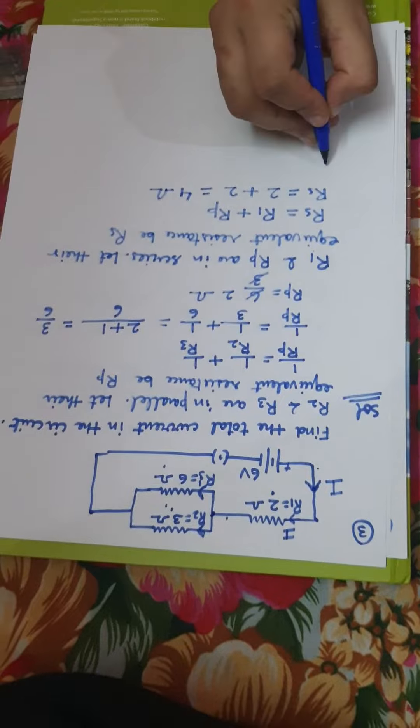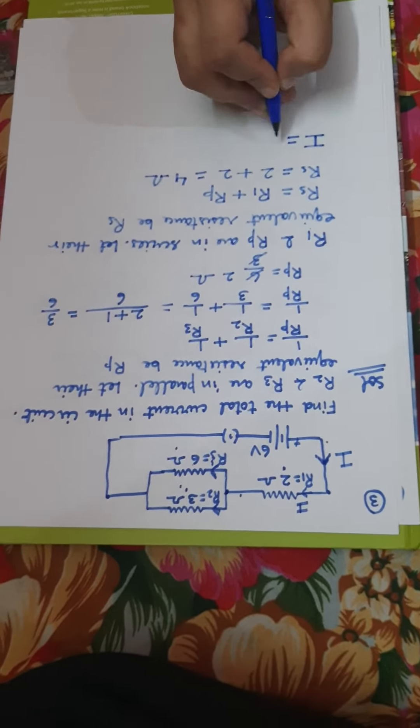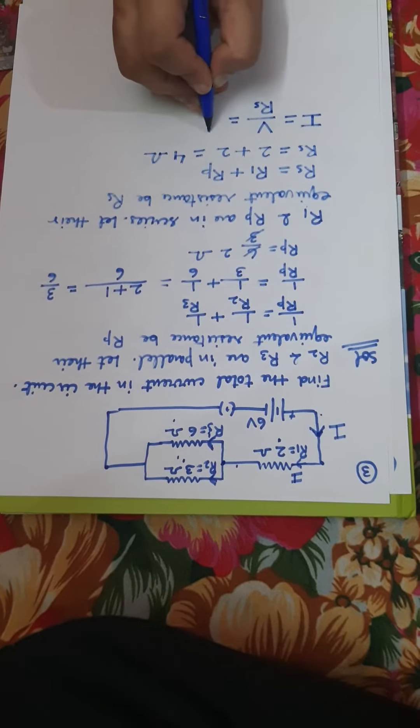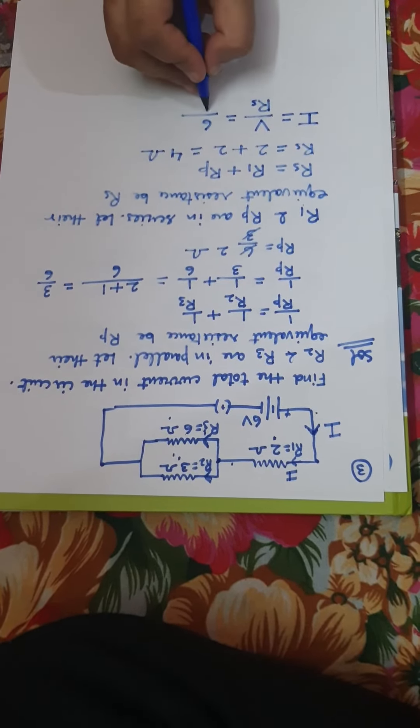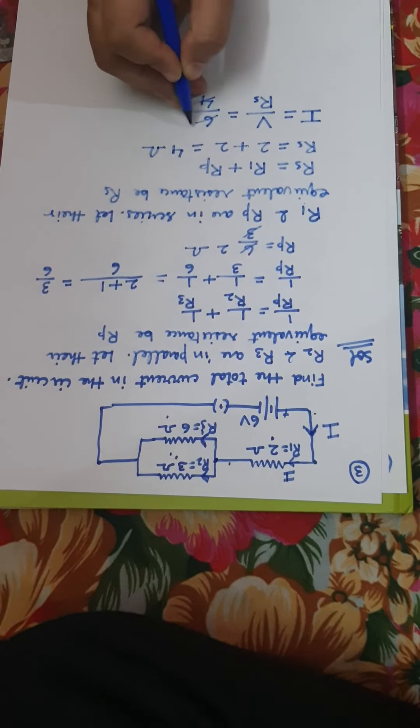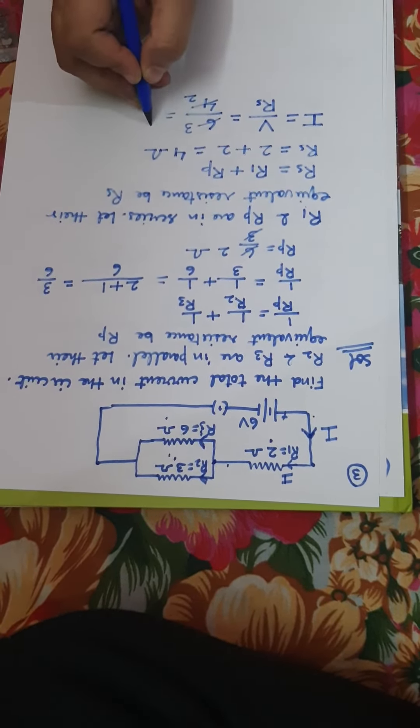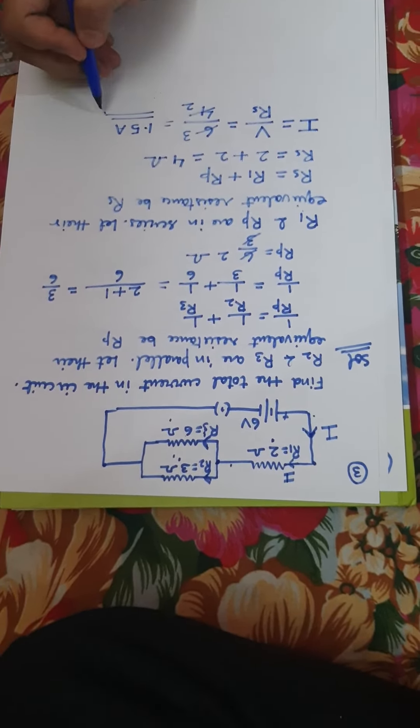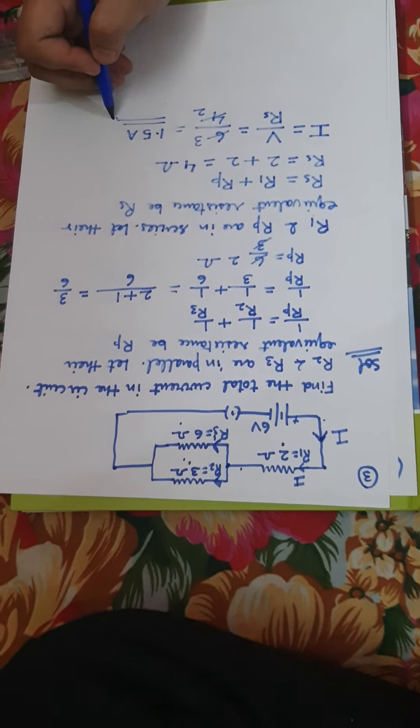Now we have to find the total current. So total current will be total potential upon total resistance, so it will be 6 upon 4. Now 2 times 2 is 4, 2 times 3 is 6, so it is 3 by 2 or you can say 1.5 ampere. So the total current in the circuit will be 1.5 ampere.